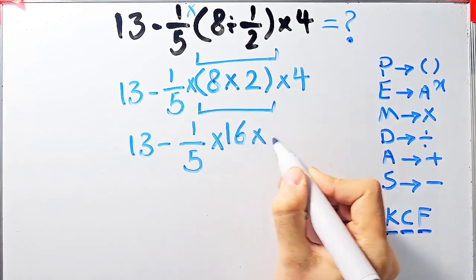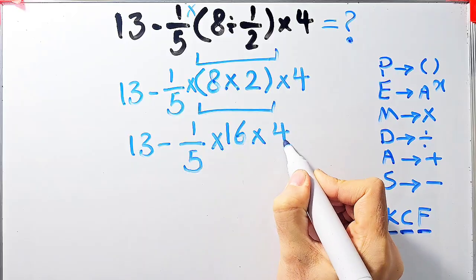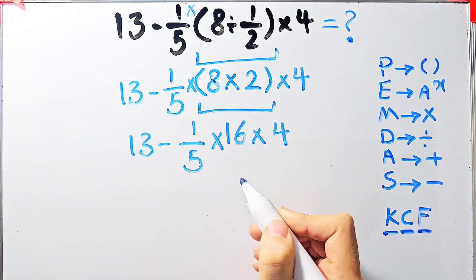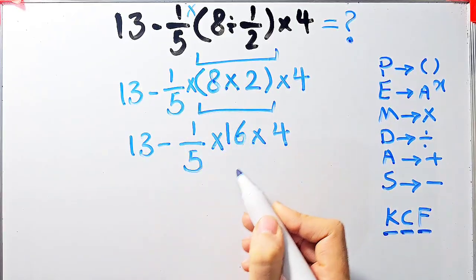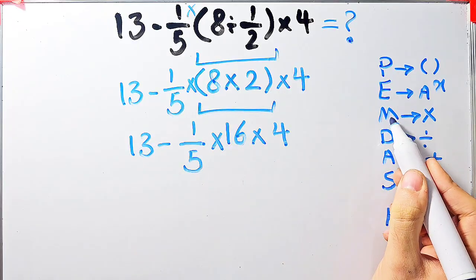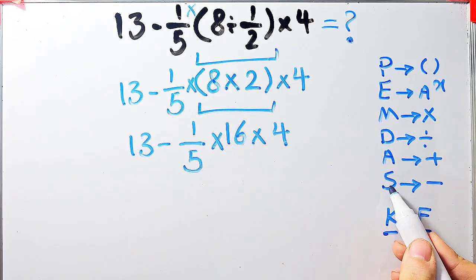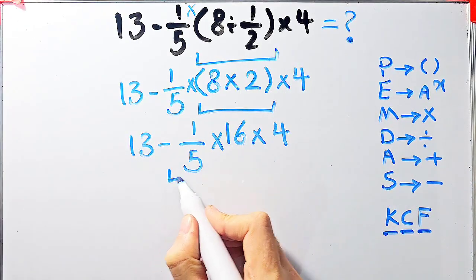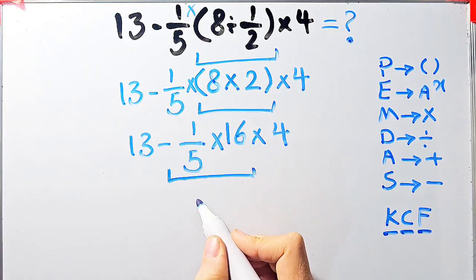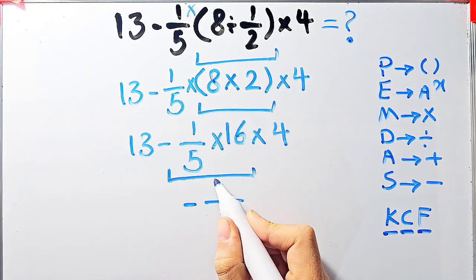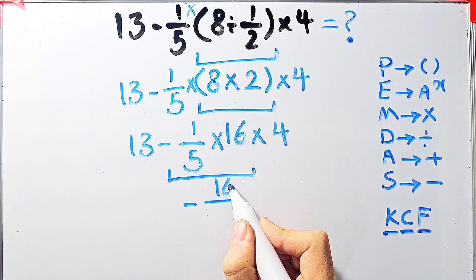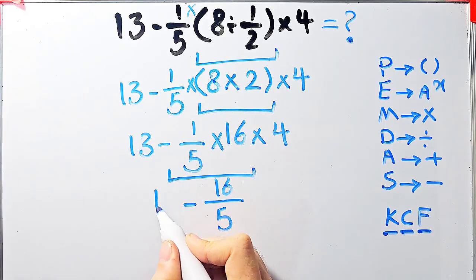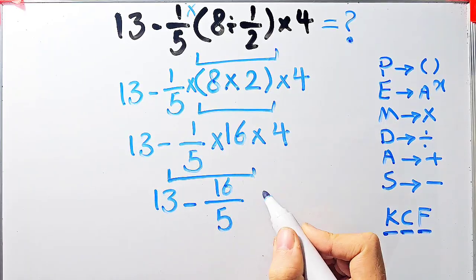In this step we have subtraction and multiplication. First we do the multiplication because multiplication has higher priority than subtraction: negative 1 over 5 times 16 equals negative 16 over 5. Now we have 13 minus 16 over 5, then times 4.